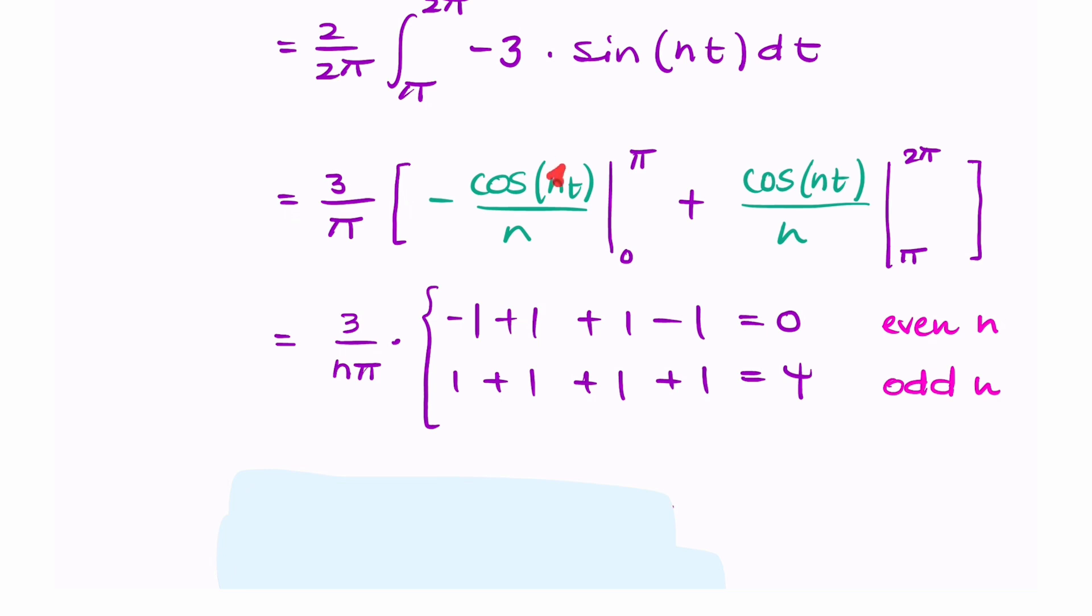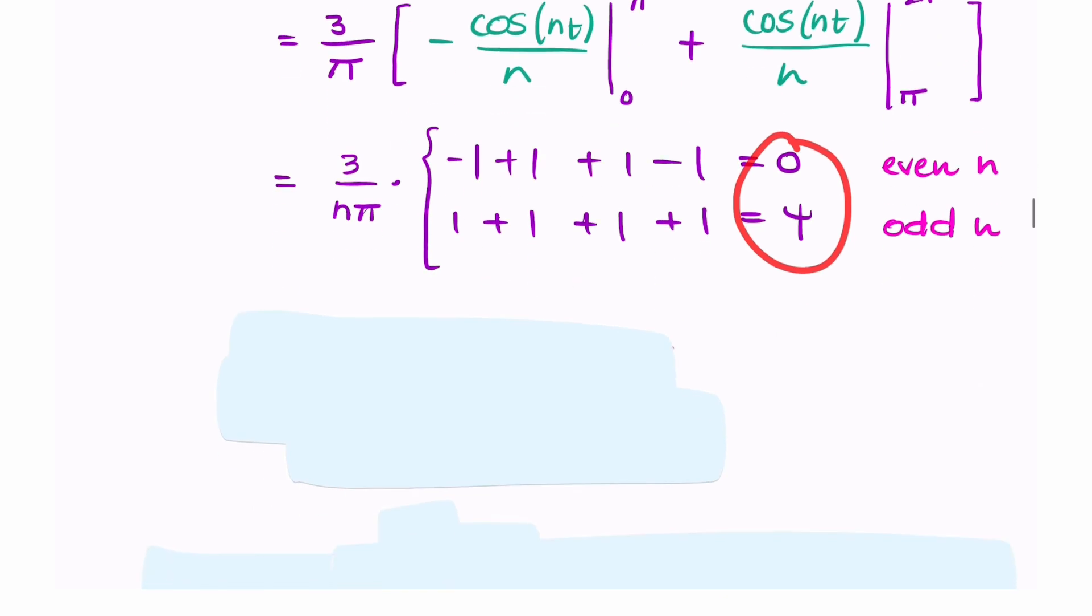And if you have an odd number for n, like 1, then these numbers add up. You have minus minus 1 minus minus 1 is 2, and then another 2, and you end up with 4. So you have two possible outcomes. For even n, it's always 0. For odd n, it's 4 times 3 is 12 over nπ.